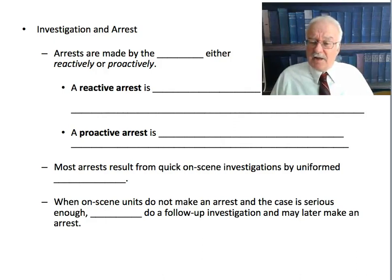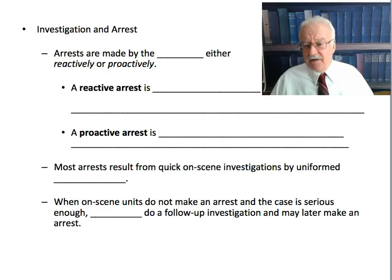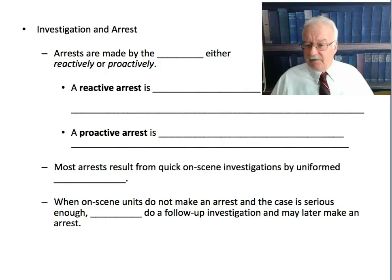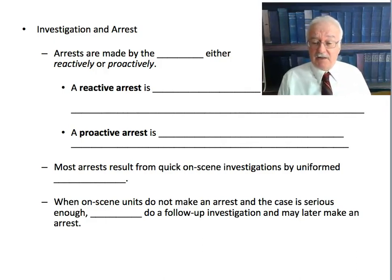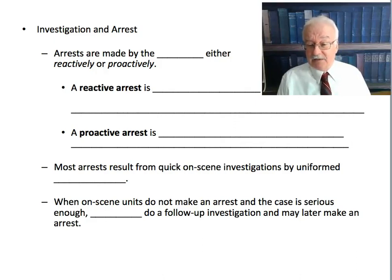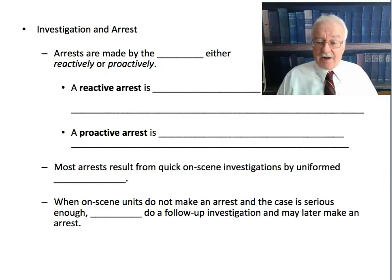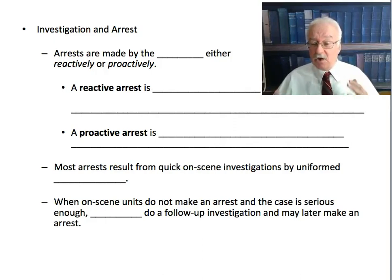A reactive arrest is one made in reaction to, in response to, a crime being committed. Most of the time a crime is committed and the police aren't there — they get a 911 call and arrive. If the perpetrator is there, they'll arrest on the scene, or if he's nearby, they may locate and arrest him. Occasionally police might be driving and actually see a crime occurring — that would also be a reactive arrest. The key is that the arrest takes place totally independent of the police, and they react by going and making an arrest.